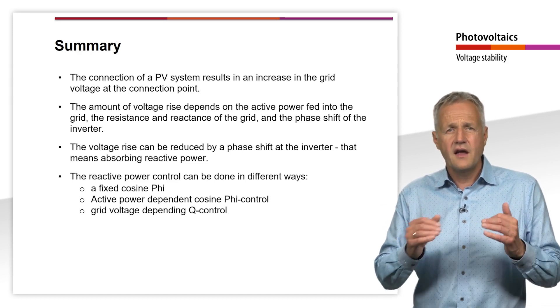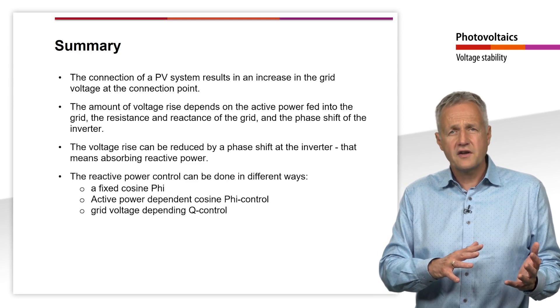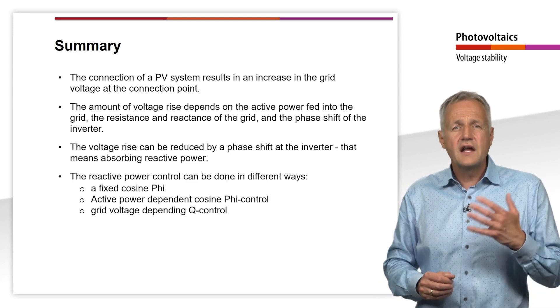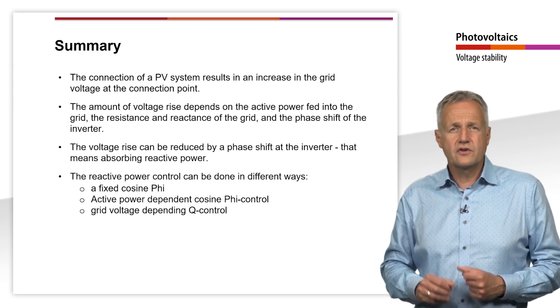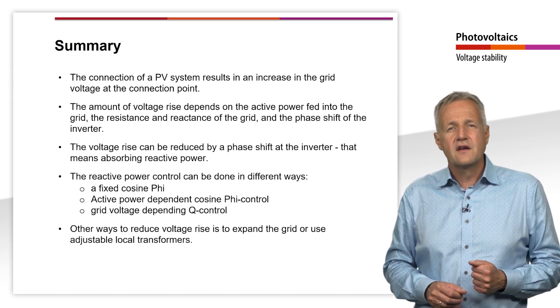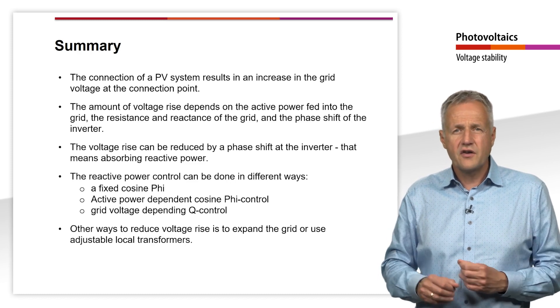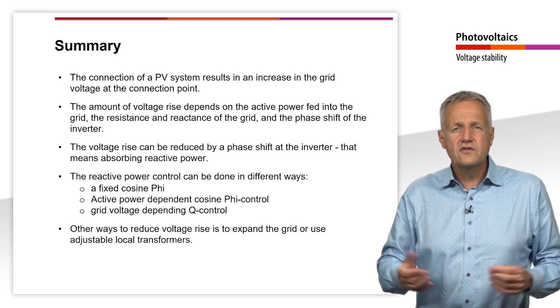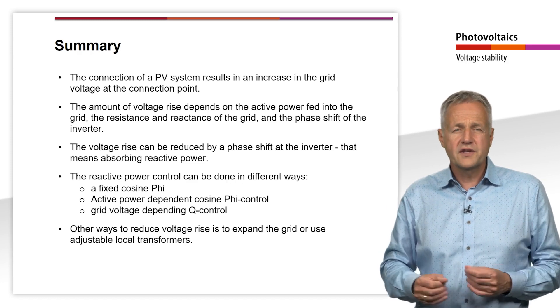Various methods are used to draw reactive power: fixed cos phi, active power dependent cos phi control, and voltage dependent Q control. Other possibilities to reduce the voltage rise are an expansion of the grid or the use of an adjustable local grid transformer.